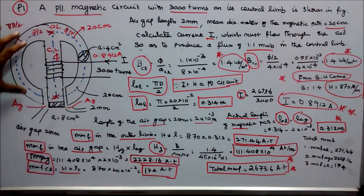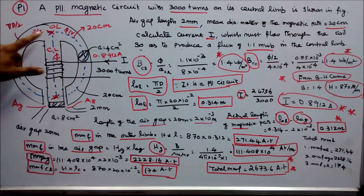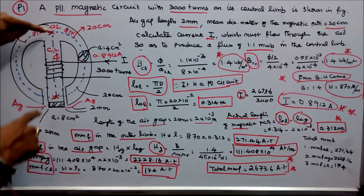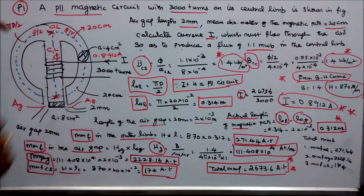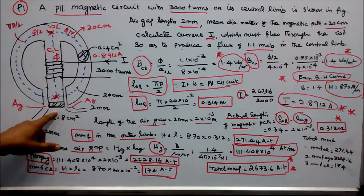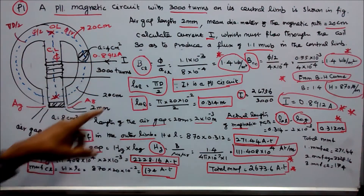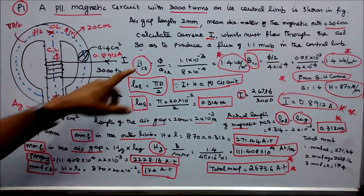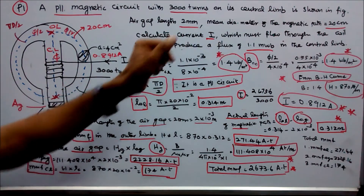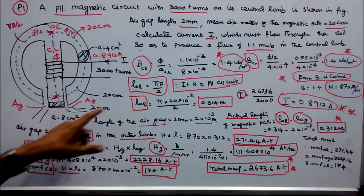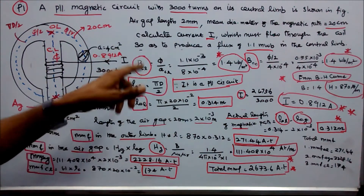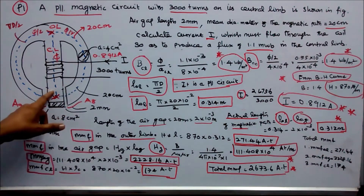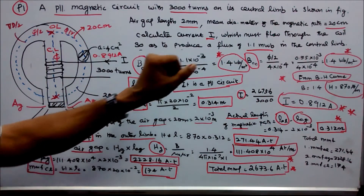In a parallel circuit, the total circumference is πd. Each outer path is πd/2 and the central path is πd/2. First step: find the flux density in the central limb. That is B = φ / A. φ is given as 1.1 × 10⁻³ and A is 8 × 10⁻⁴. Therefore, flux density in the central limb is 1.4 T per m².